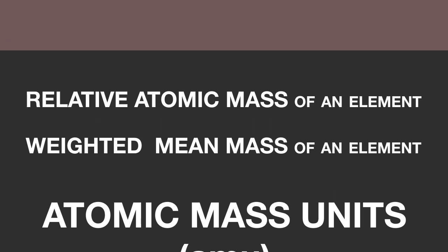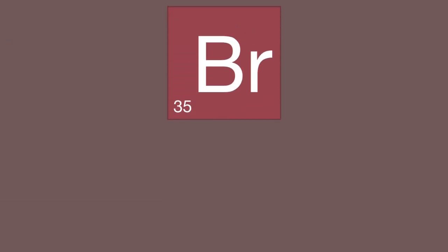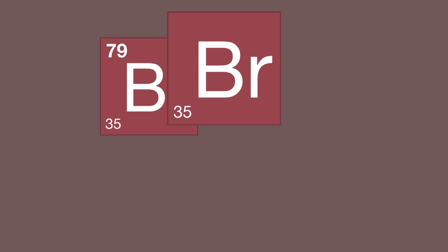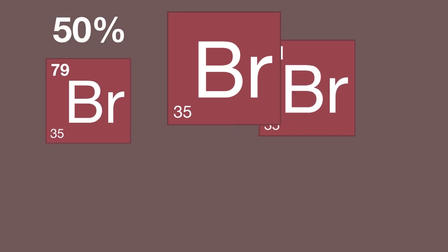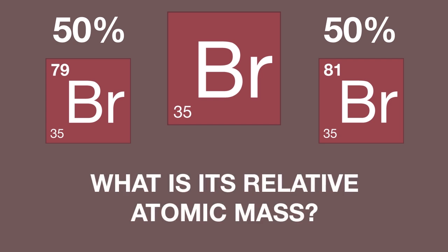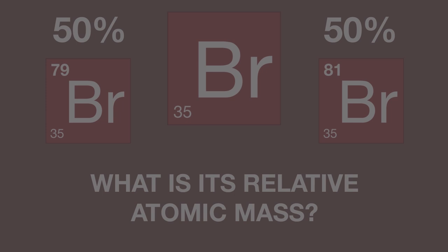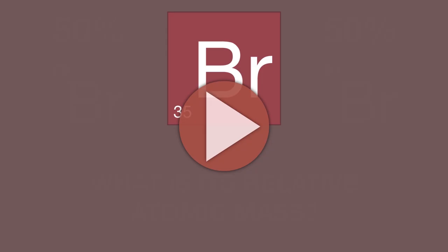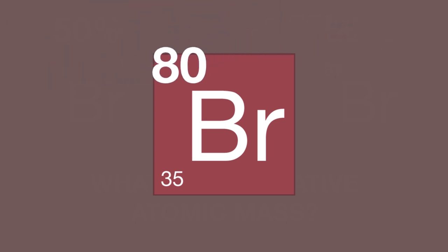Here's another example for you. A sample of bromine contains 50% bromine-79 and 50% bromine-81. What is its relative atomic mass? Pause the video. You may be able to work this out straight away. If not, write it down as in the chlorine example. The answer is 80.